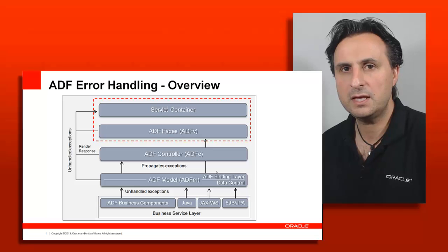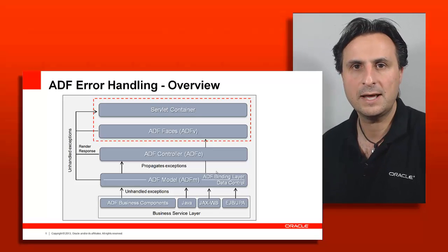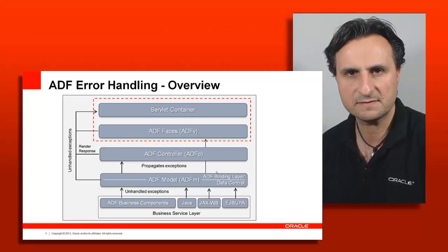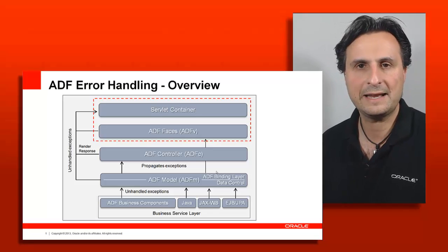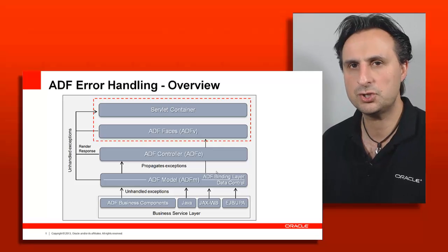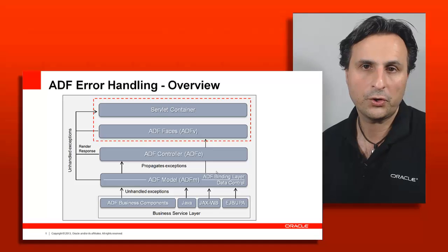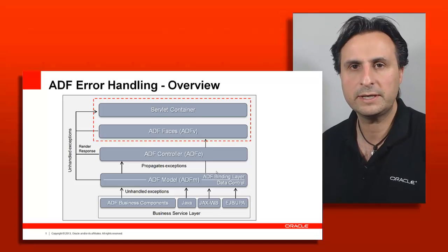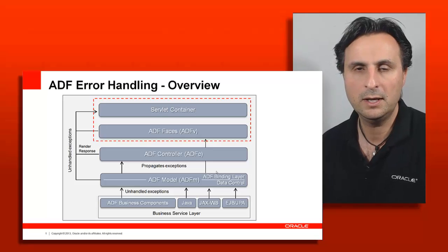Error handling on the view layer handles exceptions that cannot be handled by the task flow. The task flow doesn't handle anything that happens during render response, as that is just too late for the task flow to operate on. So here the options you have are mostly, for instance, if the error is in a managed bean, to use a try-catch block.